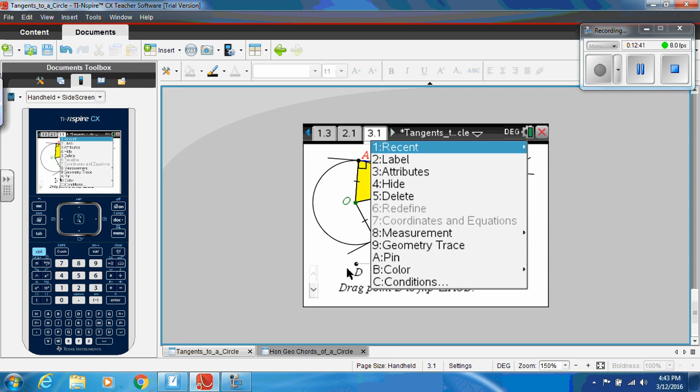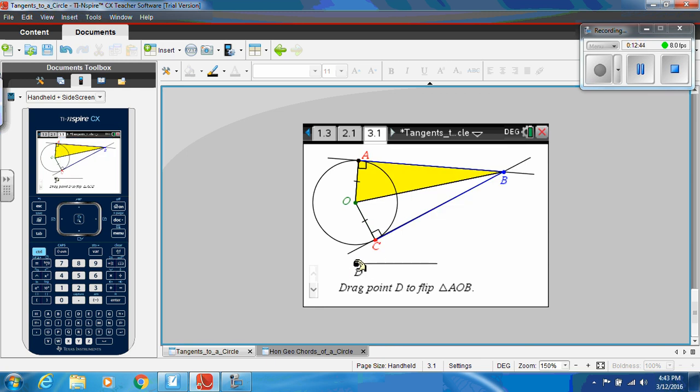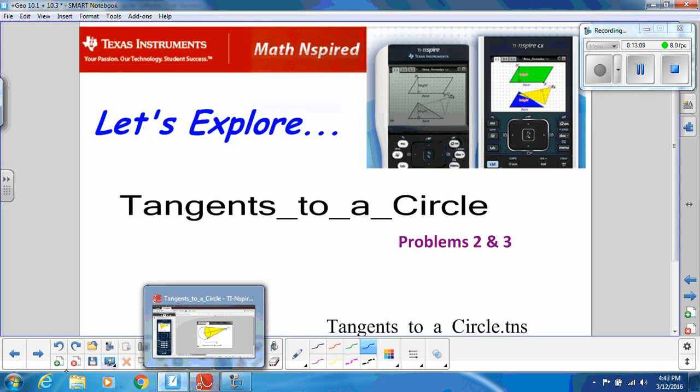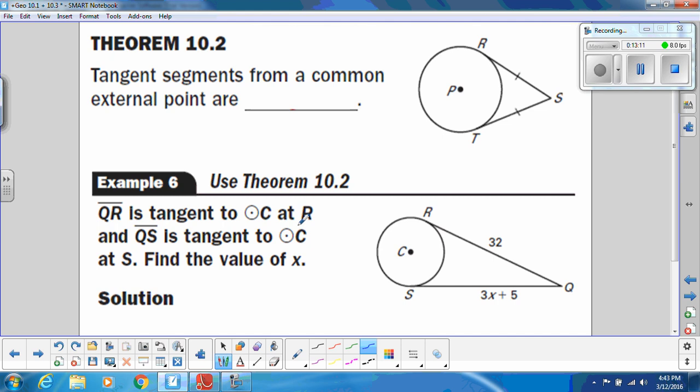So, imagine that triangle is 3D and flipping over and laying on top of the other one. So, those two triangles are both congruent by HL, which means, by CPCTC, those two blue tangent lines have to be congruent. So, let's write that in our notes, then, that if we have tangents, tangent segments from a common external point, so that's the kicker here. They have to come from the same point, that we know that they are congruent.